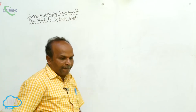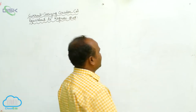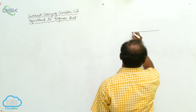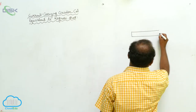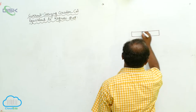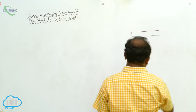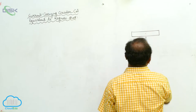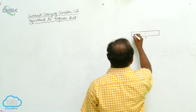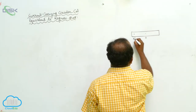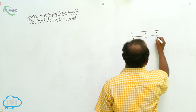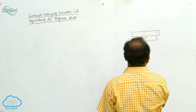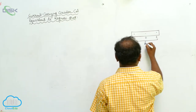Before going further, let us consider the bar magnet. O is the center. There is a north pole and there is a south pole. The distance between these two poles is equal to 2L.